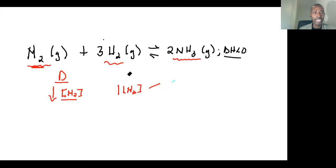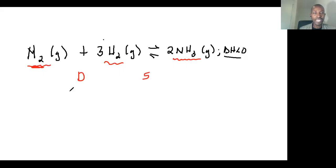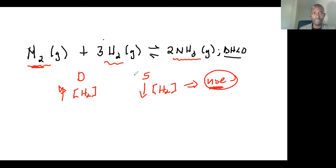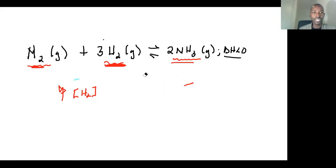Let's try another concentration example. If I increase the concentration of hydrogen by adding more hydrogen into this equilibrium system, the system must find a way to decrease the concentration of hydrogen — that is, to use hydrogen. Hydrogen is used as a reactant in the forward reaction, so the forward reaction is definitely favored in this case.